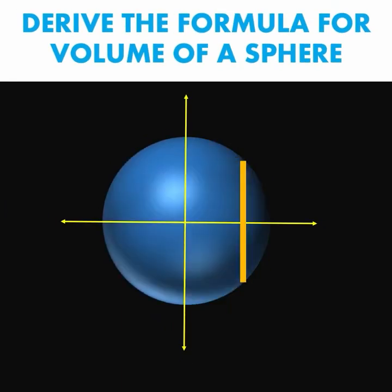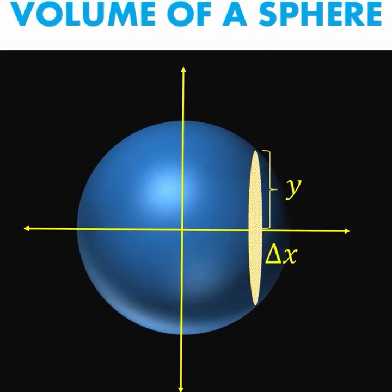Let's focus on one of those disks. Looking at a different perspective, our disk may look like this. The height of our disks is denoted as y and the width of our disks is denoted as delta x. And then let's zoom out this disk.